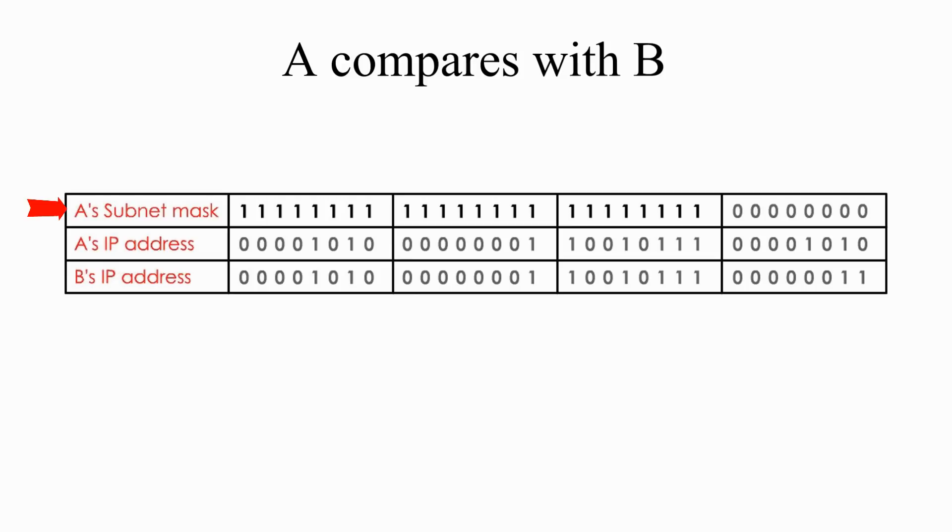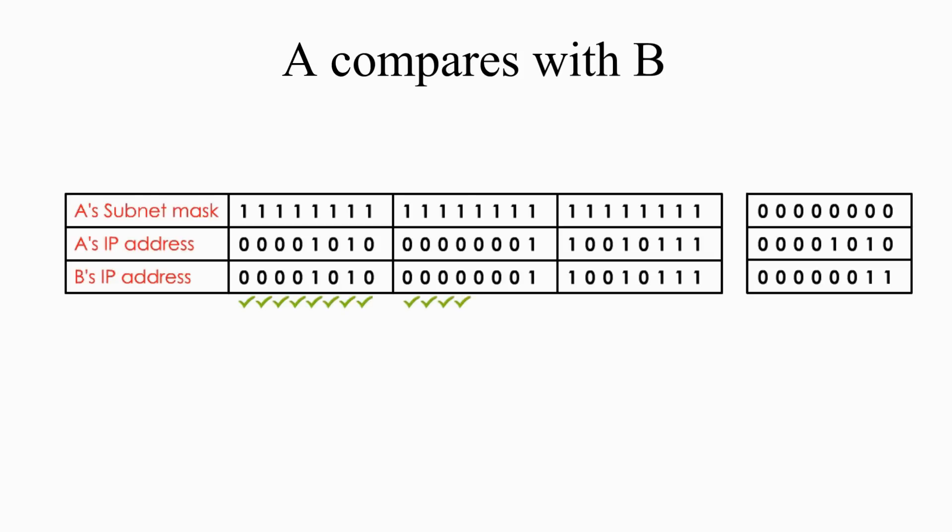Computer A's subnet mask has two parts or two segments, one's part and zero's part. Let's separate them so that we can easily see these two different parts. Now the computer A would compare its IP address bit by bit with computer B's IP address only under the first part of subnet mask, which is 1, 1, 1 part. Every bit is compared, and you can see they are all the same.